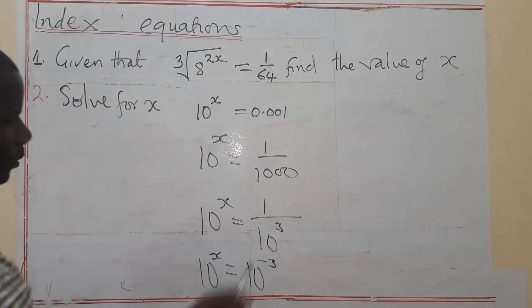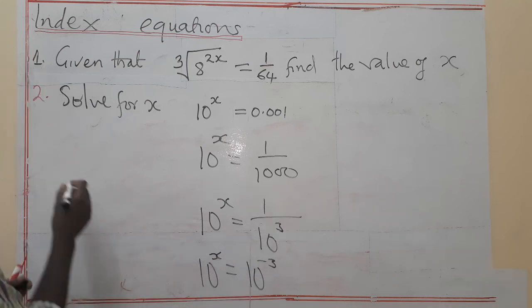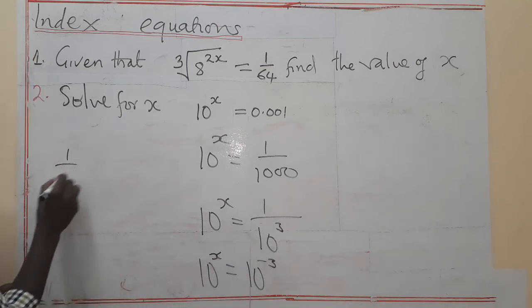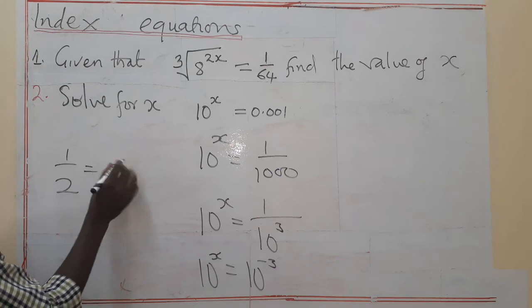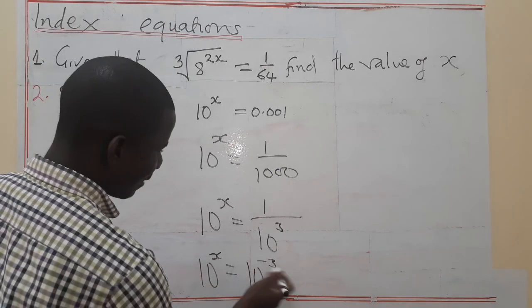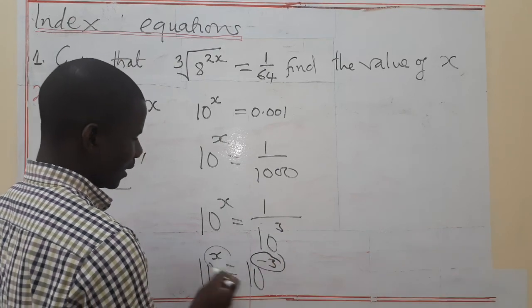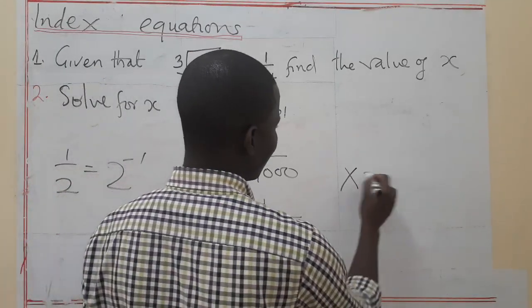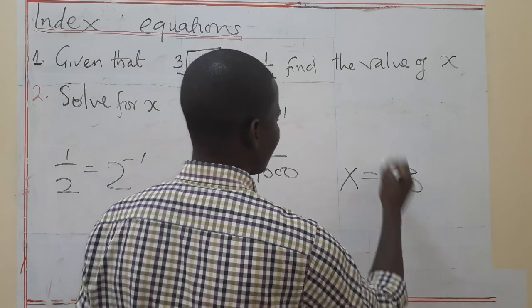When you rewrite it, I'm sure you know that 1/2 is the same as 2^(-1). So at this point, the base is the same. So we can equate the indices. So X equals negative 3.